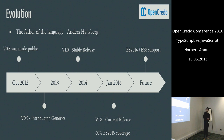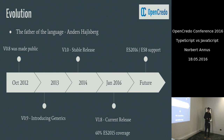In 2014, it reached a stable release, and after a few minor releases this January, they rolled out V1.8, which approximately covers 60% of the current ES2015 feature set through compilers and polyfills, compared to the 74% that Babel provides.